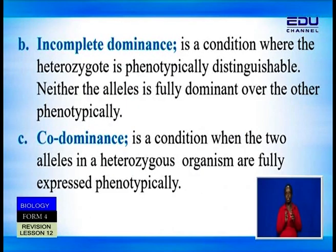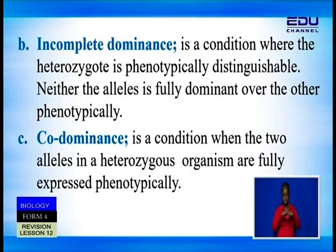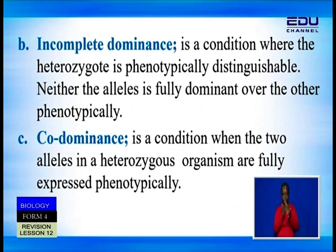So we have looked at complete dominance and incomplete dominance. We also have what we call co-dominance. Co-dominance is a condition where the two alleles in a heterozygous individual are both fully expressed phenotypically.